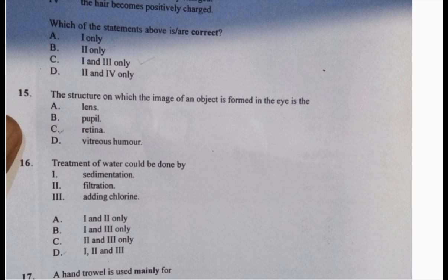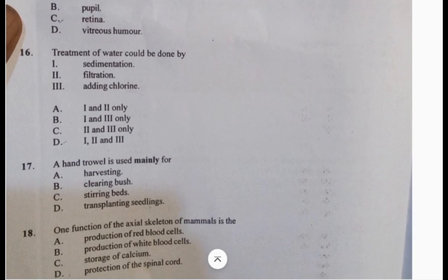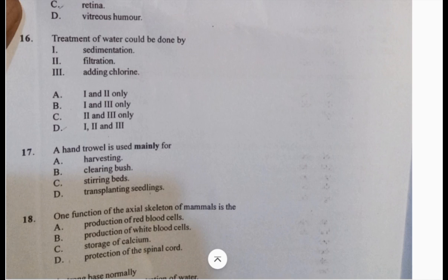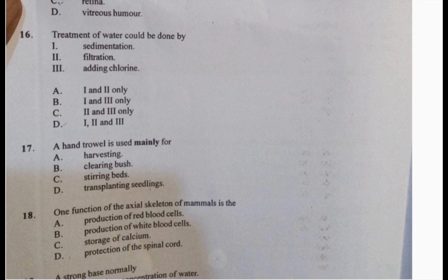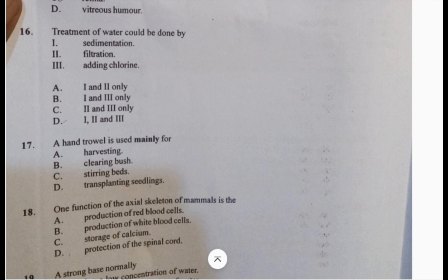The structure on which the image of an object is formed in the eye is C, the retina. Number 16: treatment of water could be done by sedimentation, filtration, and addition of chlorine. They are all correct, so the answer is D. Number 17: a hand trowel is mainly used for transplanting seedlings, so the answer is D.